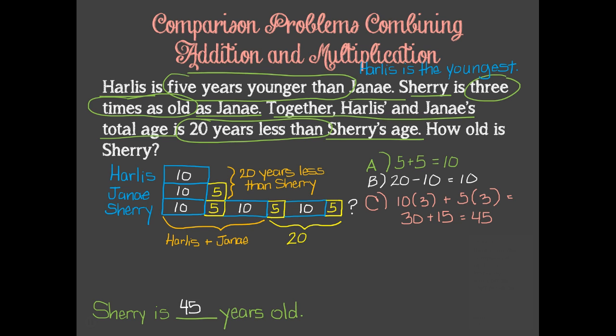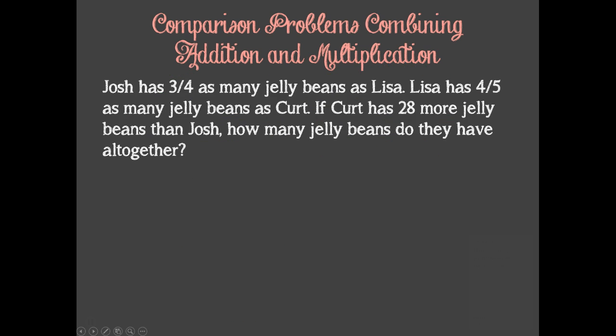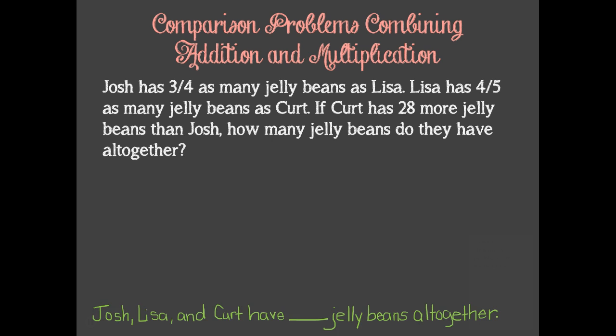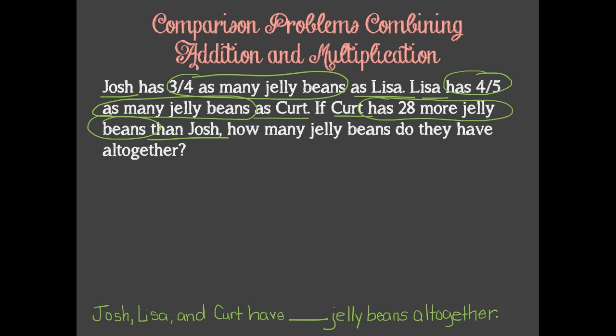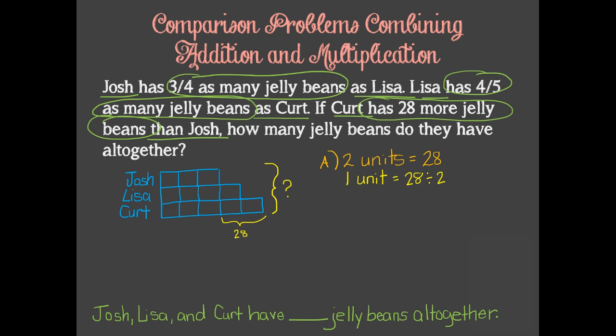One more problem and we're done. I'd like you to try this one on your own. Pause the video while you solve it. When you're ready to check your answers, start the video again. Did you remember to rewrite the question in sentence form? Did you identify the important information? Does your model look similar to mine? Did you follow the same process, or did you approach it another way? Did you find that Josh, Lisa, and Kurt have 168 jelly beans altogether?